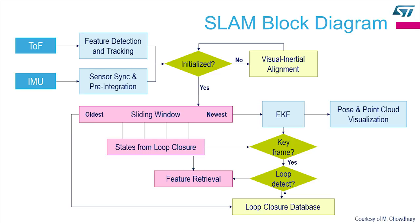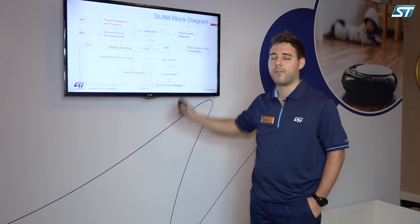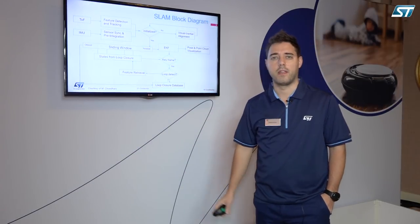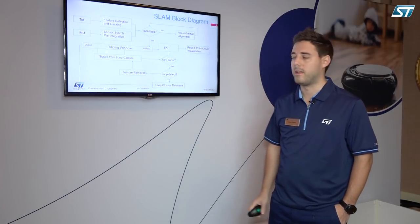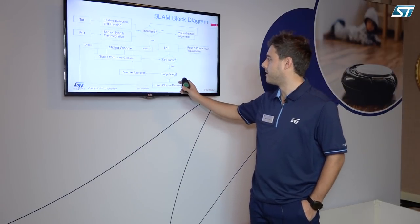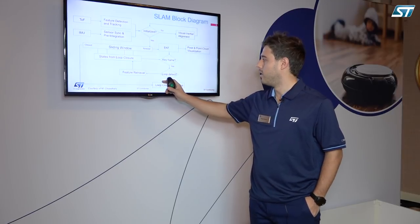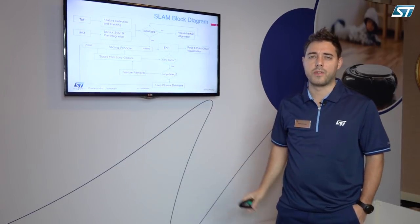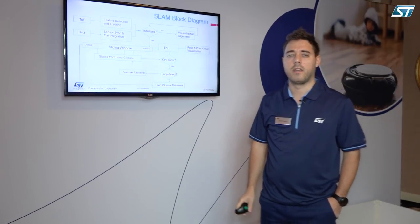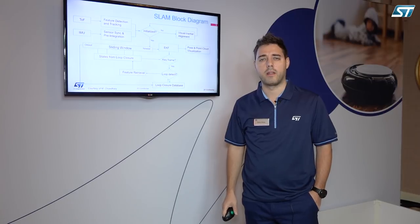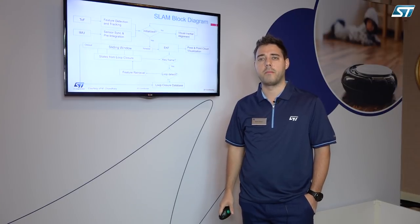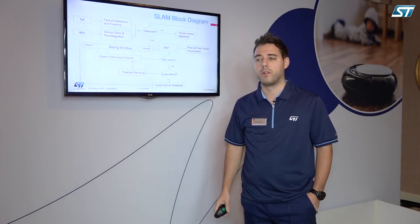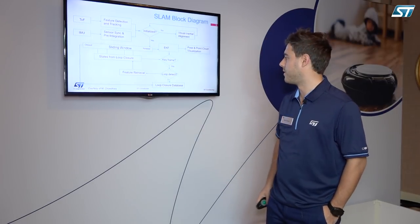It is sliding in windows and processing by windows, trying to find a keyframe in the maze. When the loop is detected, we try to update the same features in order to better estimate and close the loop to fit the features.